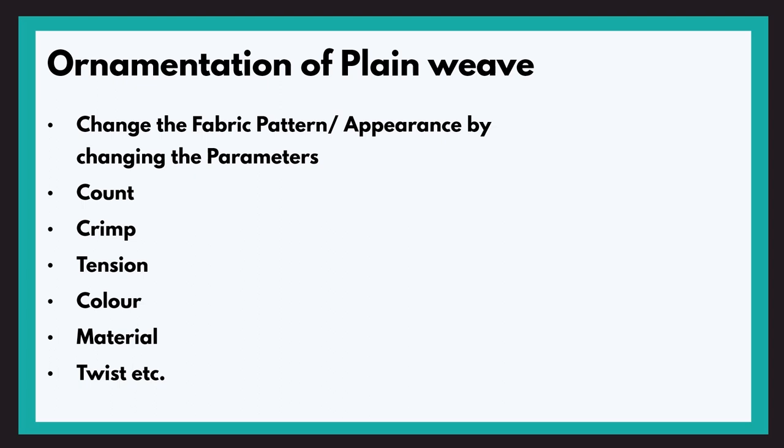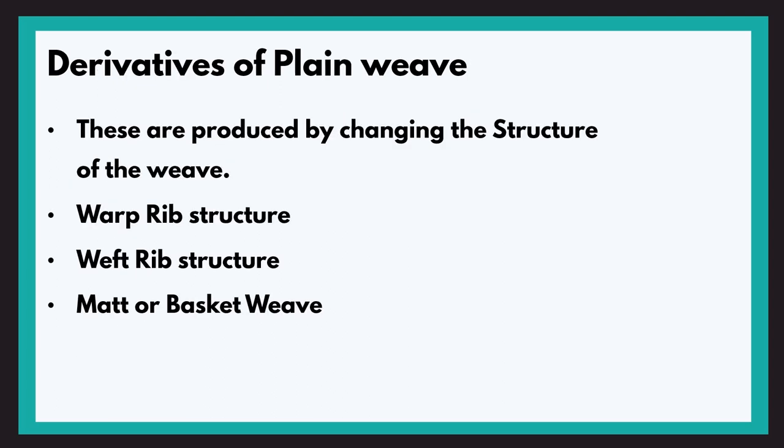There are many more effects that can be produced. Now let us see some derivatives of plain weave, which are produced by changing the structure of the weave. The derivatives of plain weave are: warp rib structure, weft rib structure, and mat or basket weave.